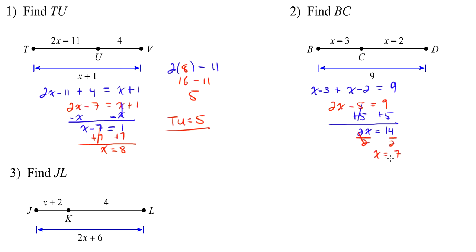Now that we know x equals 7, we find BC by plugging in: x minus 3 becomes 7 minus 3, which is 4. So BC equals 4.